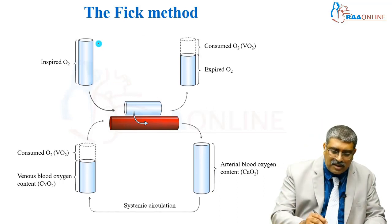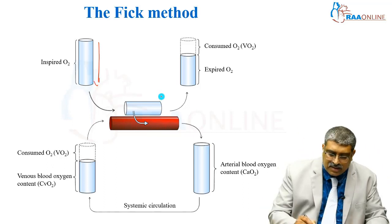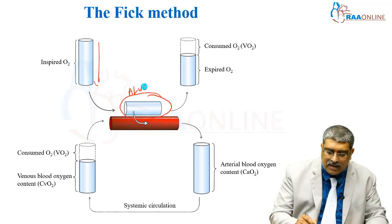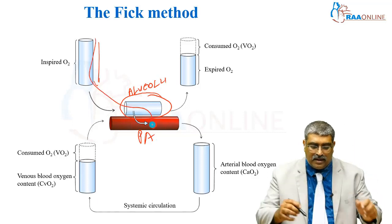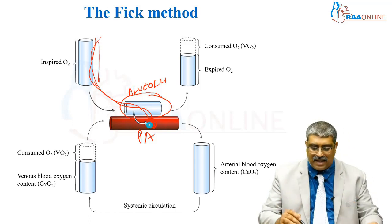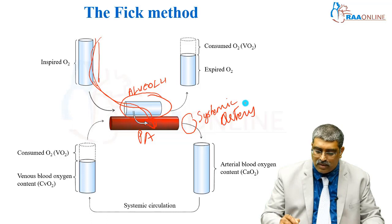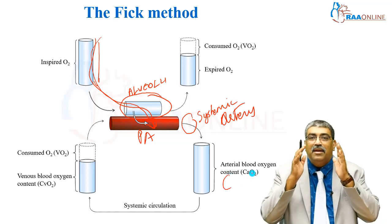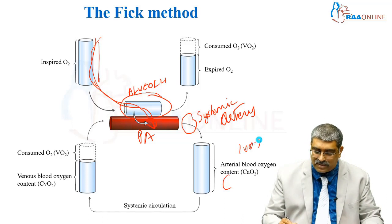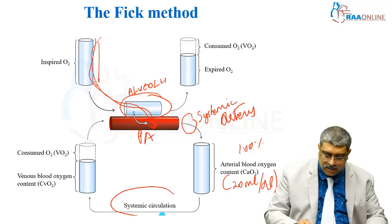This is the inspired oxygen where you breathe from the external source. This is the alveoli and this is the pulmonary artery. As the oxygen comes from the alveoli through the pulmonary artery, gas exchange happens and your aorta and systemic artery becomes oxygenated. The saturation in the arterial system is around 100% and the content is around 20 ml per deciliter, which is being made available to the organ system.